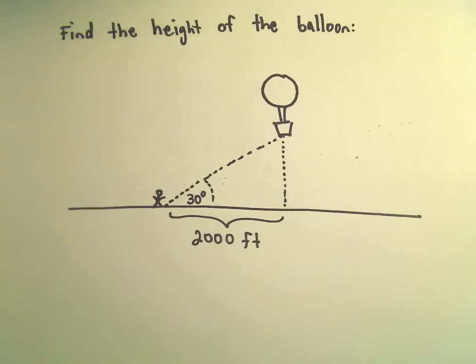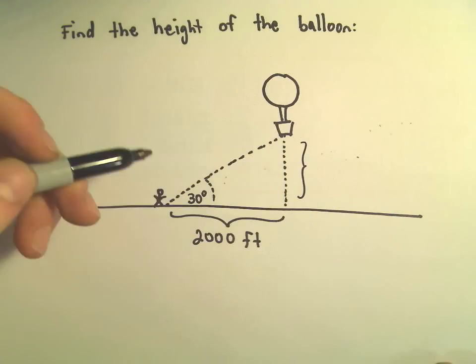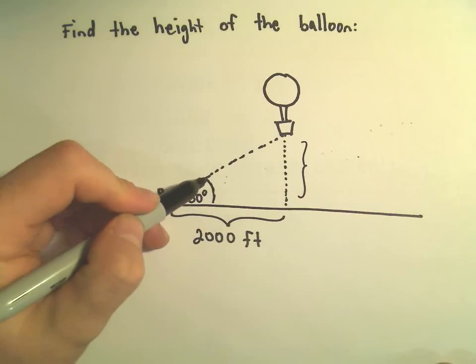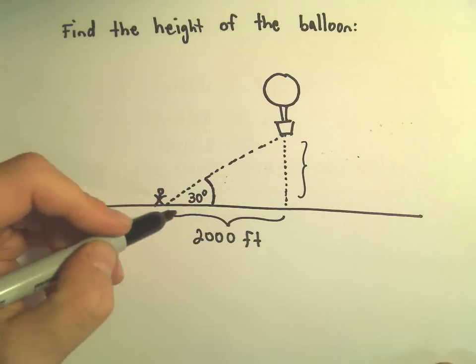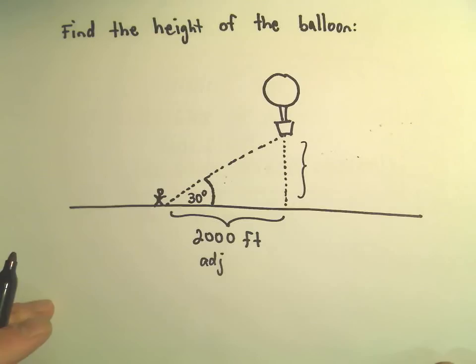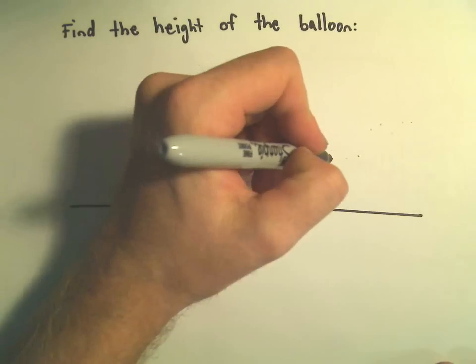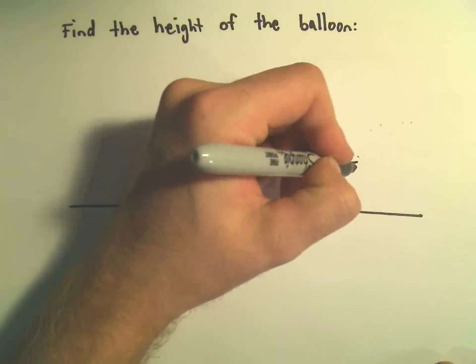Okay, we're trying to figure out this height. Here's the angle that I'm given in this problem. The 2,000 feet represents the adjacent side, and the height represents the opposite side.